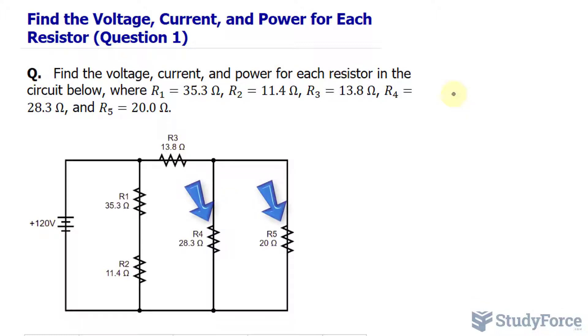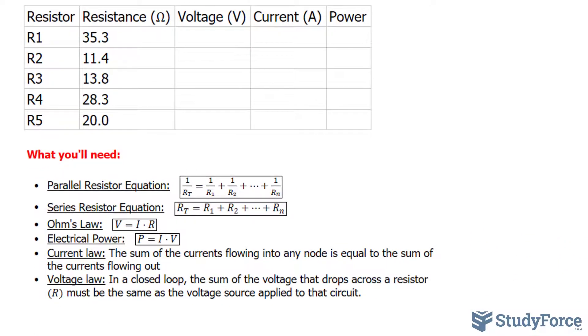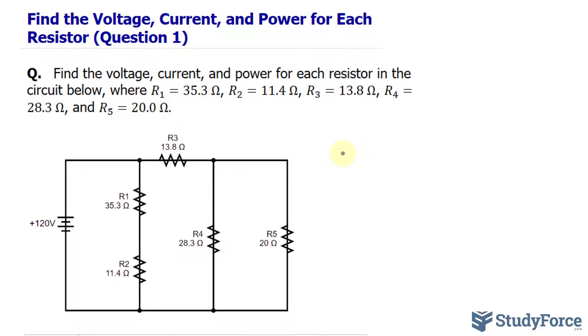The very first thing I want to do is combine R sub 4 and R sub 5, these two resistors, into one. They're currently in parallel, and there's a formula that we use to combine resistors that are in parallel, shown right here. This reads that 1 over the total resistance is equal to the reciprocal sum of the resistors that are in parallel. That being said, I'll write down 1 over R sub A, where R sub A represents the resistance of the two resistors combined, equals 1 over 28.3 ohms plus 1 over 20 ohms.